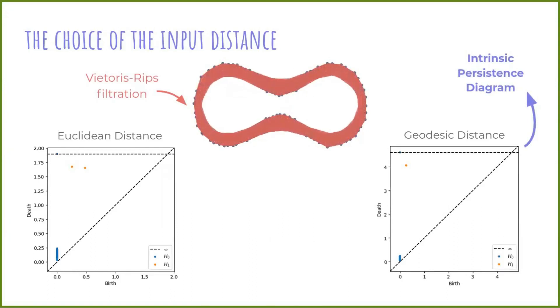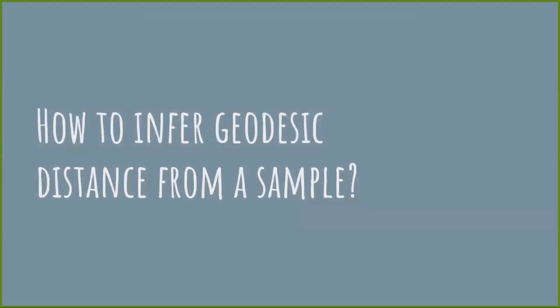Okay, this is very nice. But in real life, we are only given the sample, and in general, we don't have any further information about the underlying manifold. So the question is, how to infer the geodesic distance from the sample?